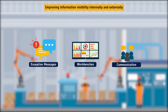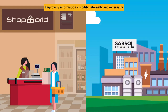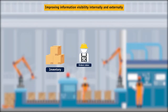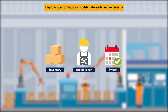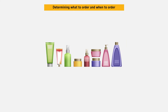They also get the ability to communicate these plans within their organizations or to trading partners. This enables ShopWorld and Sabsal Enterprises to make profitable distribution decisions based on real-time visibility into inventory, orders, labor, and events.